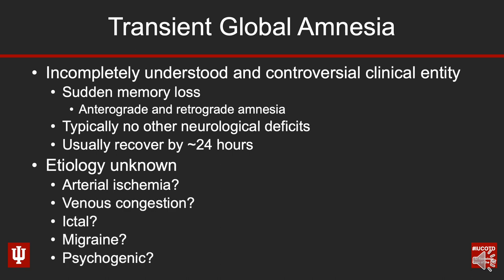In terms of etiology, that's where it gets really controversial. It's possible that it's arterial ischemia; there's thought that maybe venous congestion plays a role. Is this some sort of an ictal event? Is it a complex migraine? Or are these patients having psychogenic illness? None of these really neatly describe or fit this entity. Probably the closest based on imaging appearance and some clinical manifestations would be arterial ischemia, but unlike regular ischemia, the diffusion signal abnormality may not happen right away — it may take several hours to show up — and these patients don't necessarily have other risk factors for arterial ischemia, so it really doesn't fit well at all.